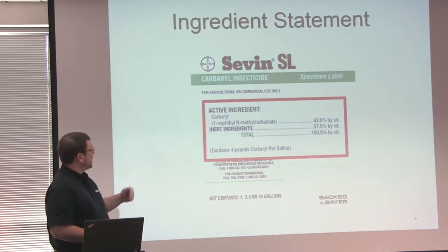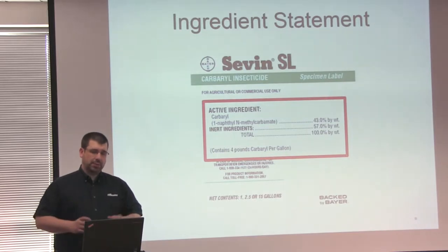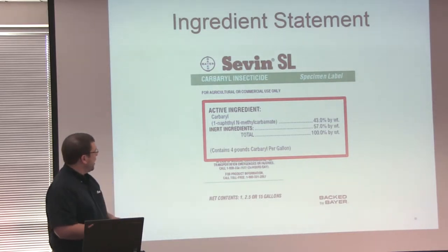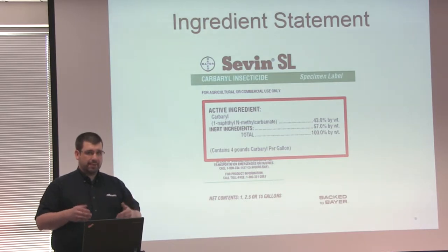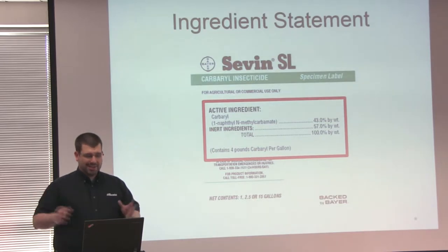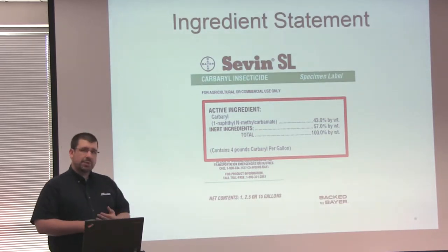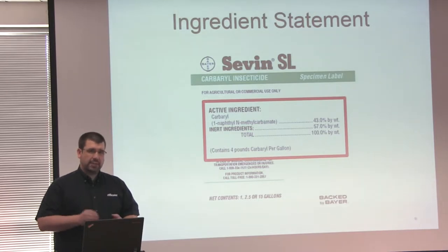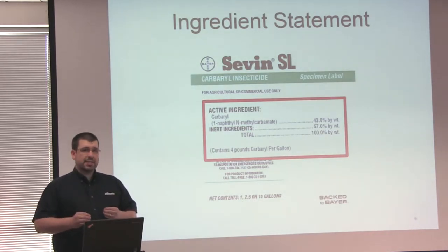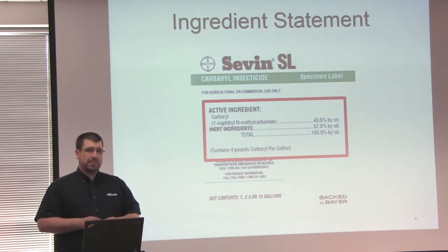The next is the active ingredient. This is usually located below the trade name and it contains what we call the common name. For example, in Sevin, the common name is carbaryl. Underneath the common name, if it has one, is the chemical name, which is usually in parentheses and has a long scientific name. Underneath that is what we call inert ingredients. Every company does not have to specify what the inert ingredients are. The inert ingredients are basically just other materials within the pesticide to make it work in order to control the certain pest.